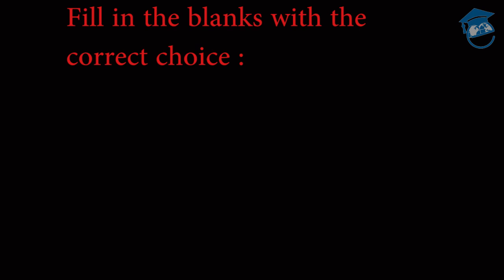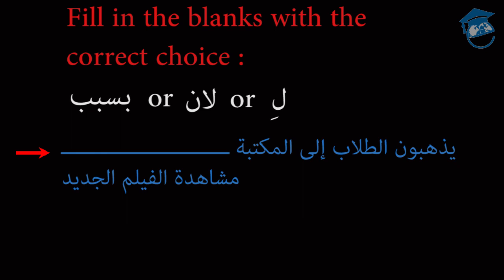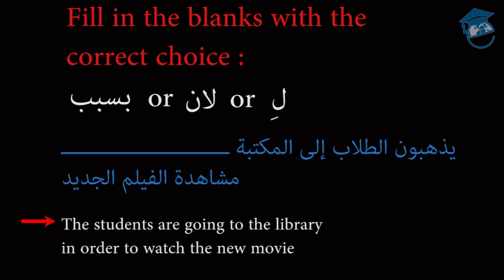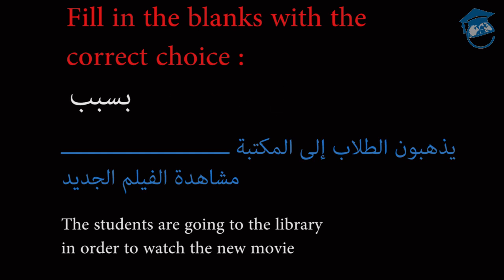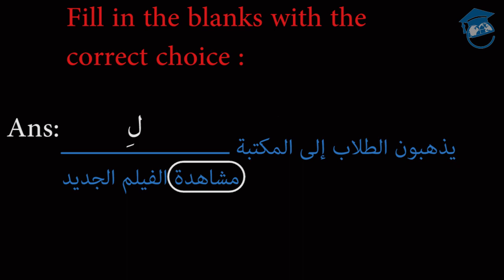Now it's your turn. Fill in the blank with the correct choice — bisabab, li'enna, or li. The students are going to the library in order to watch the new movie. Would you use bisabab, li'enna, or li? The correct answer is li, because of mushahada — which is a mazdar.